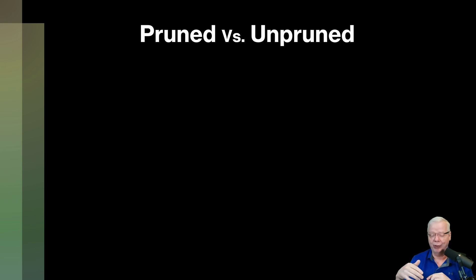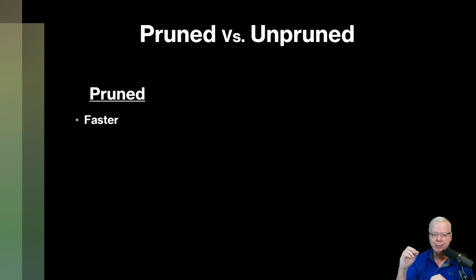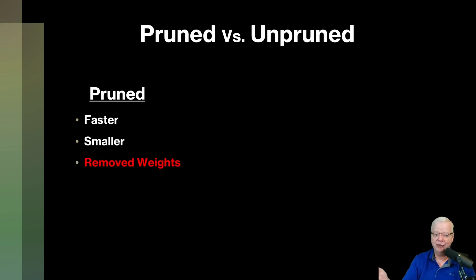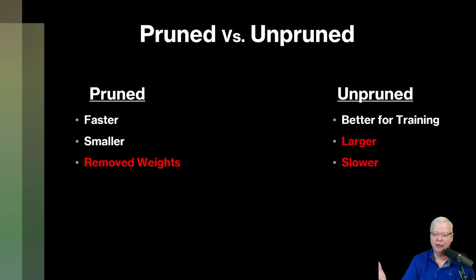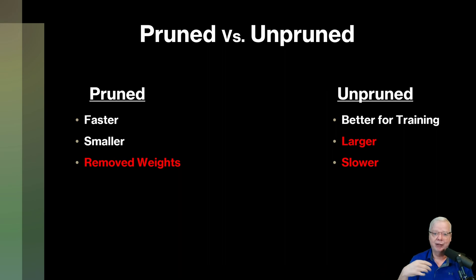Then we have pruned versus unpruned, or normal, models. For the pruned model, this is a smaller model than the unpruned one — similar to pruning a bush and getting a smaller bush because you cut off branches. The advantage of a pruned model is that it runs faster and is a smaller file, but it does come at the cost of removed weights. For unpruned models, they are better for training, have a larger file size, and run slower when generating images.